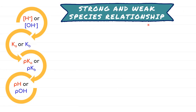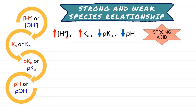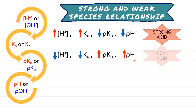Here is the summary of strong and weak species relationships. We relate their concentrations of H+ or OH− to the Ka or Kb value, then apply negative log to determine pKa or pKb as well as pH or pOH. For the first case, high concentration of H+ means Ka will also be high. Since P indicates negative log, pKa and pH values will be low — indicating strong acid. In contrast, low concentration of H+ and low Ka means high pKa and high pH, indicating weak acid.